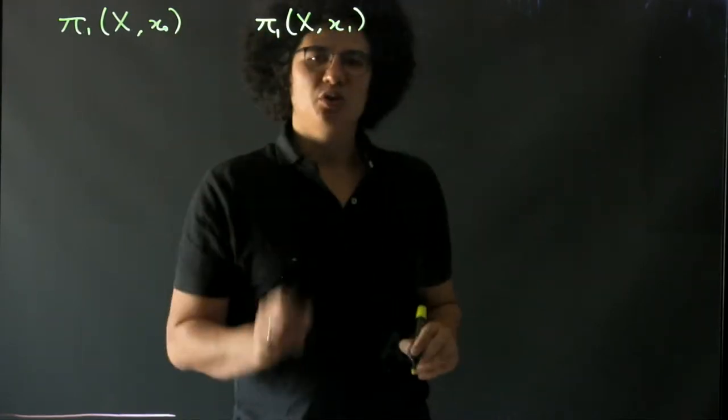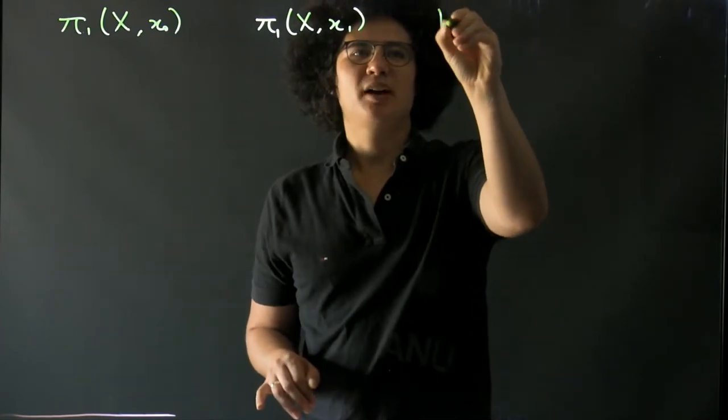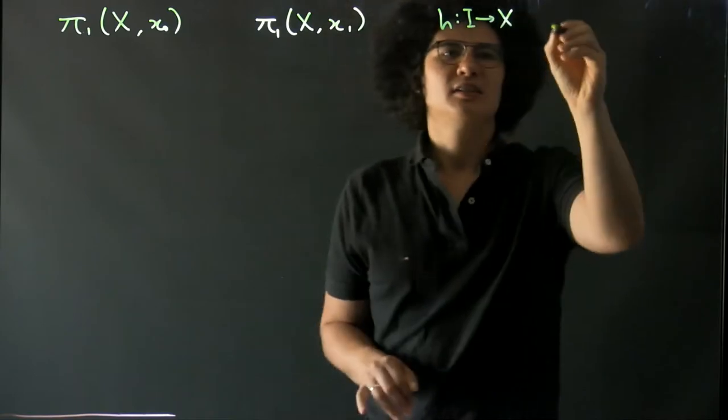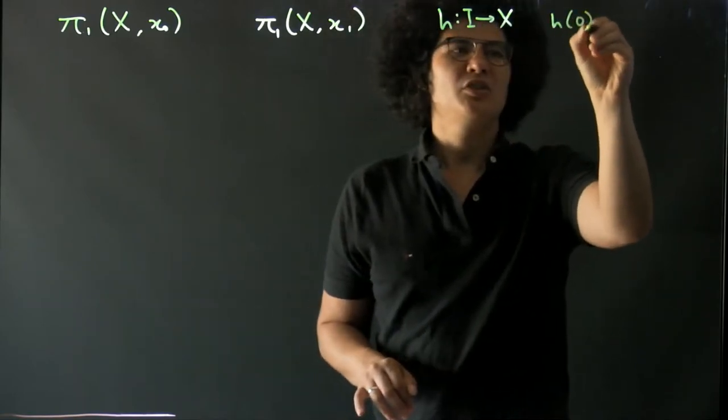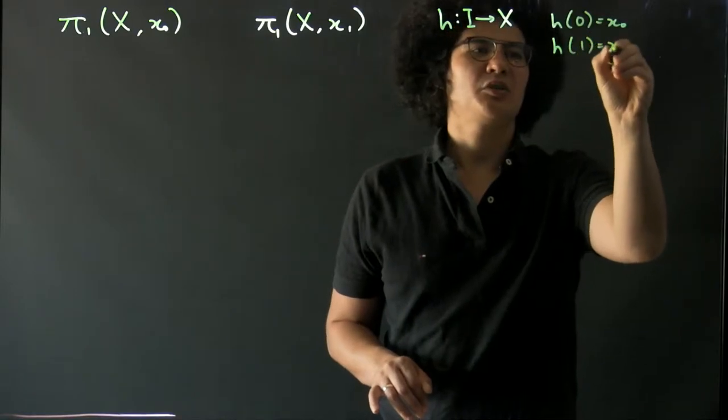If x₁ and x₀ are in the same path component of X, then we can choose a path h in X with h(0) equals x₀ and h(1) equals x₁.